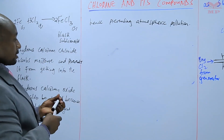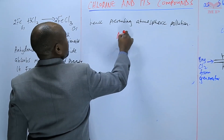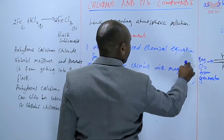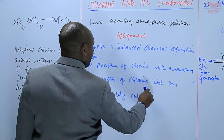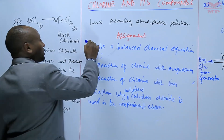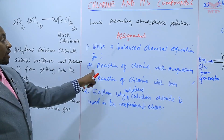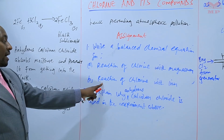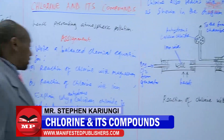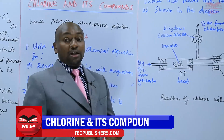We are going to have an assignment on this. Question one: write a balanced chemical equation for (a) the reaction of chlorine with magnesium, and (b) the reaction of chlorine with iron. Question two: explain why anhydrous calcium chloride is used in the experiment above. We will stop there and continue next time. Goodbye.